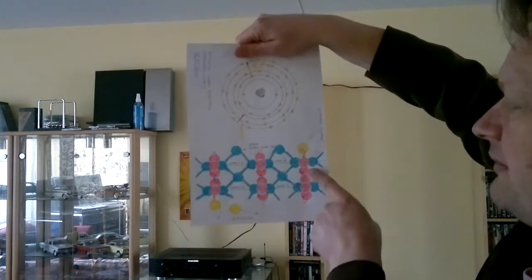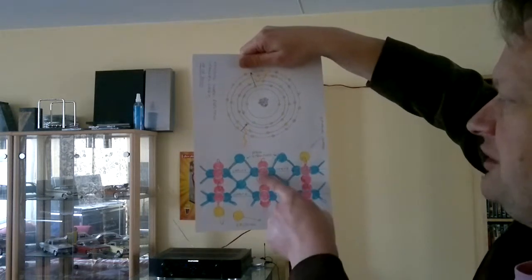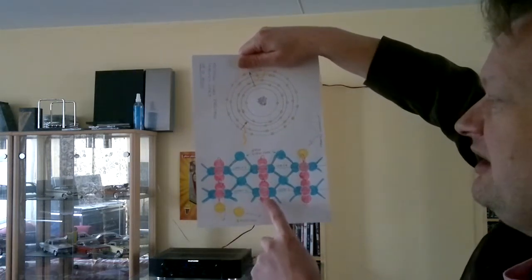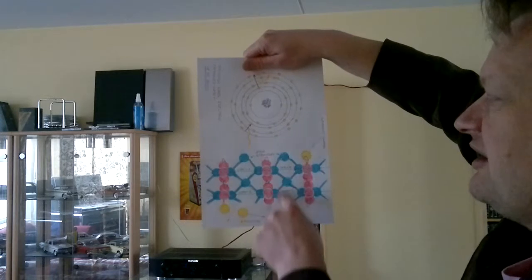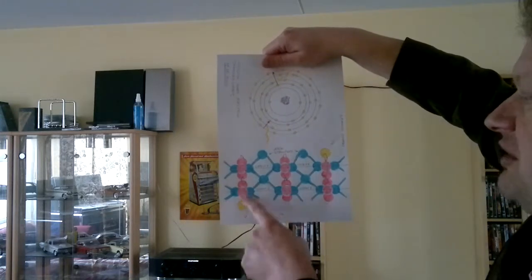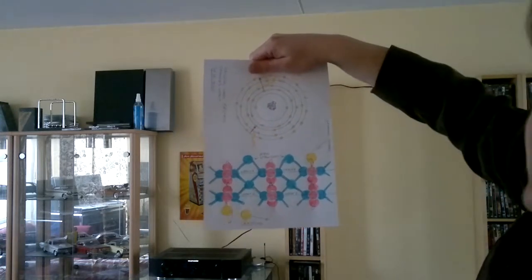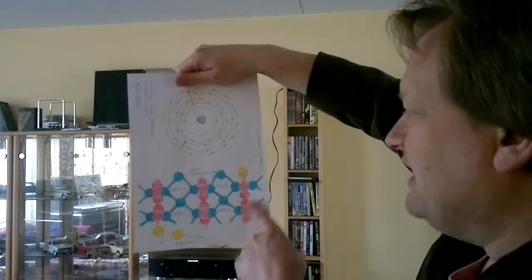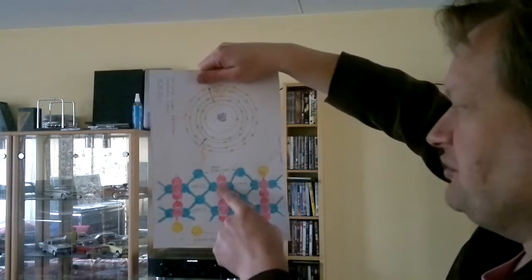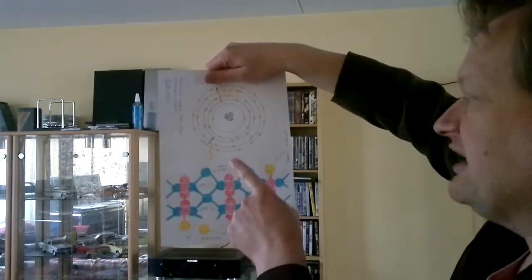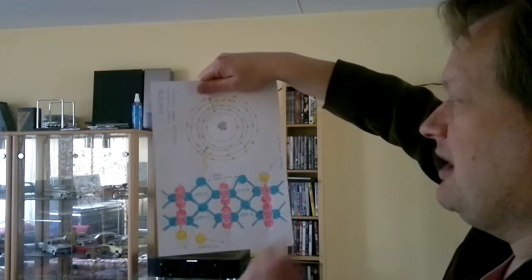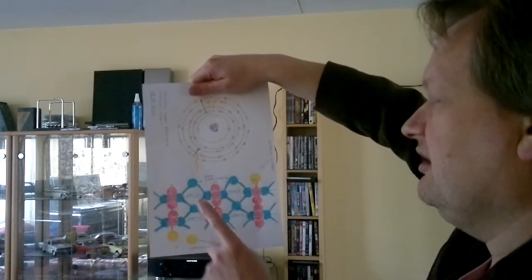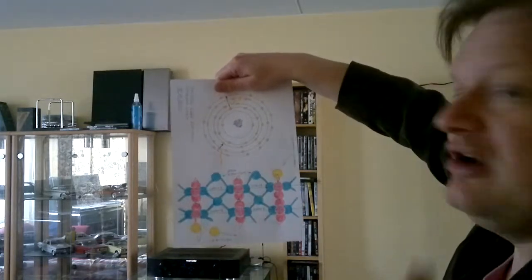First off, a proton turns into a neutron, and this gives enough space for the neutron in the other shell to turn into a proton. And only then we get emission. When a proton turns into a neutron, there's no electron catch or emission, but when a neutron turns into a proton, there is emission.